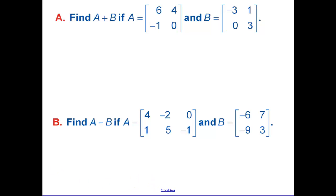Next example. Again, add together the like things. So A plus B. Six plus a negative three, well that's going to be a positive three. A negative one plus a zero, that's a negative one. Four plus one is five. Zero plus three is three.